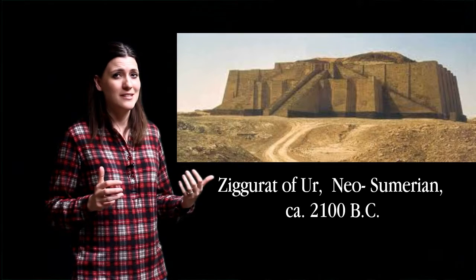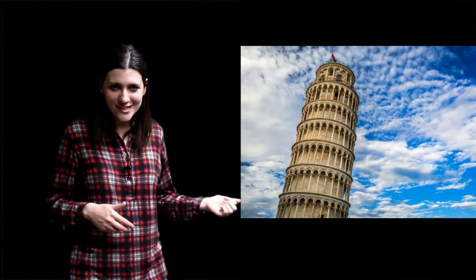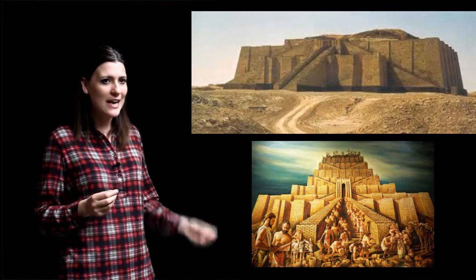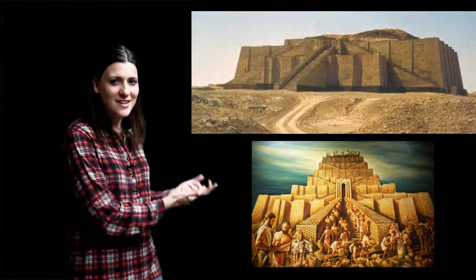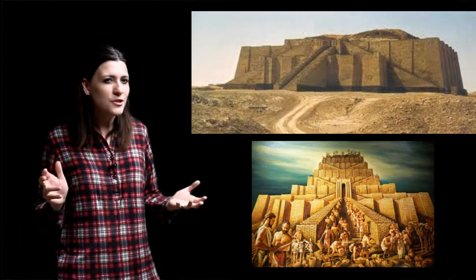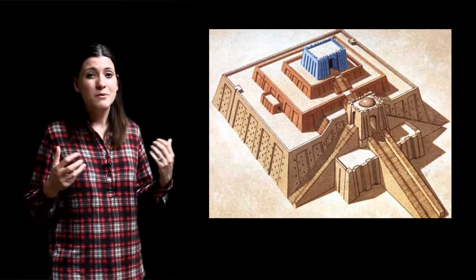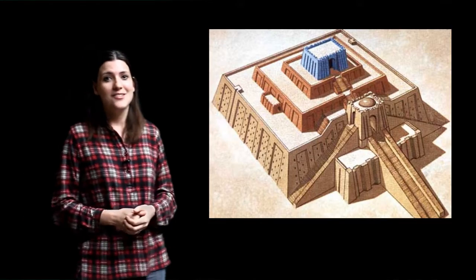I'm going to start with the Ziggurat of Ur, which is a really good example of what many scholars think the historic Tower of Babel looked like. Because the biblical text places the story in the Mesopotamian region, and because the account in Genesis 11 corresponds with the materials and process used when making these ziggurats, the ziggurat is the best imagery to reference in this story. Back then the ziggurat was the Mesopotamian temple — the most sacred space, considered the primary connection between heaven and earth.